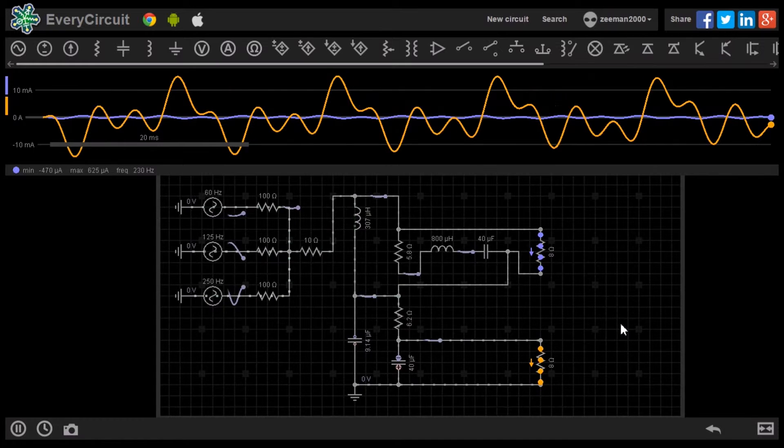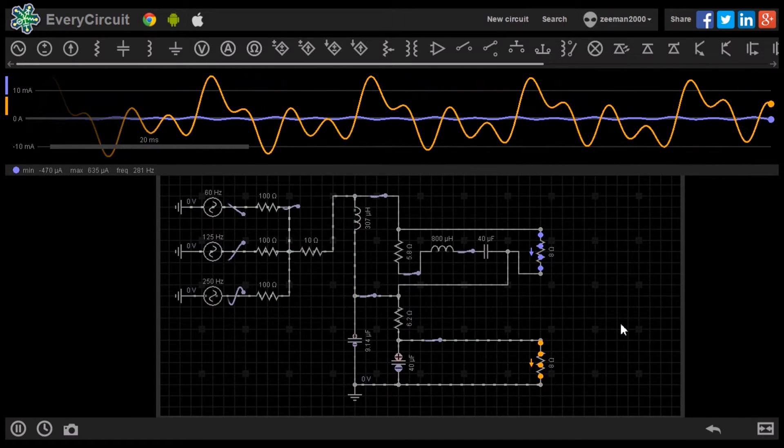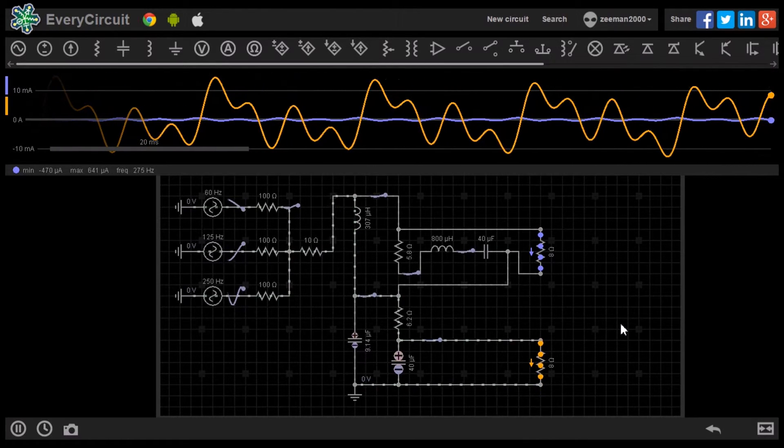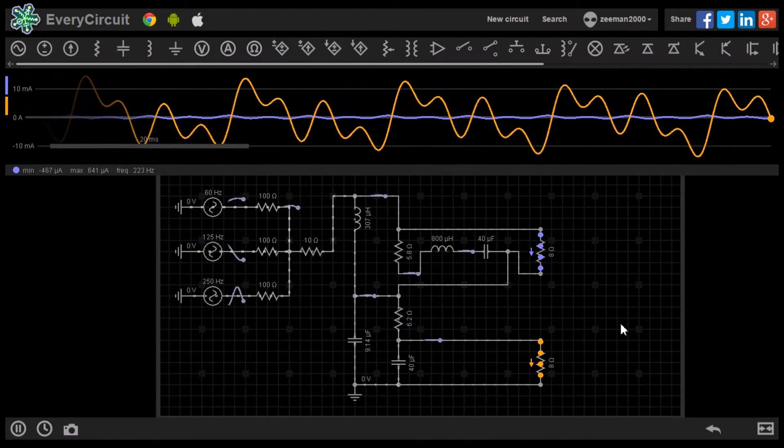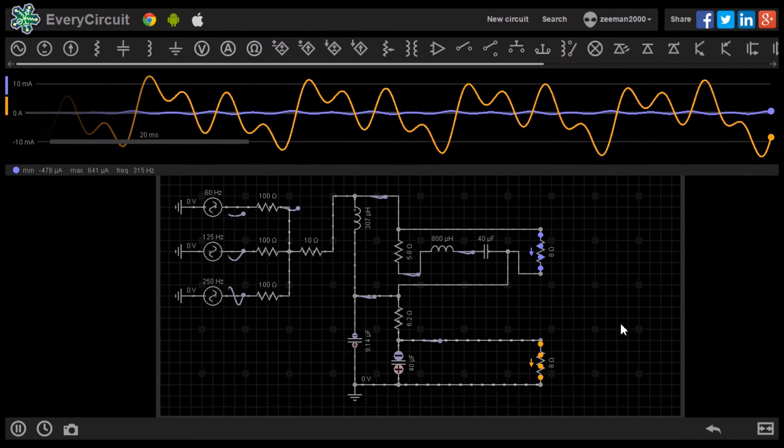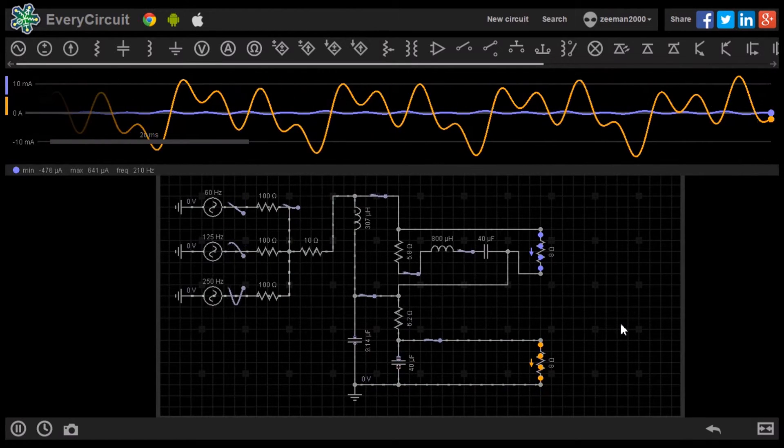This circuit demonstrates how a speaker system discriminates between bass and treble sounds. A similar circuit will be used inside the stereo for bass and treble enhancement, and will also be used in a graphic equaliser circuit.